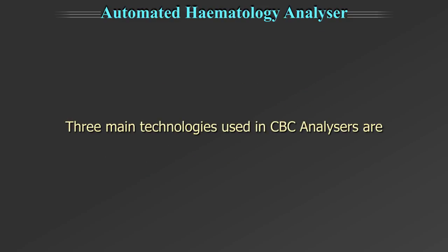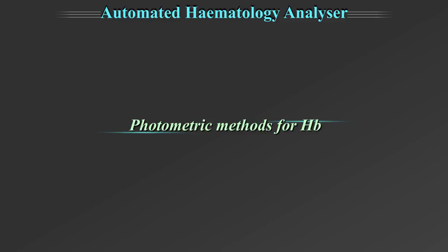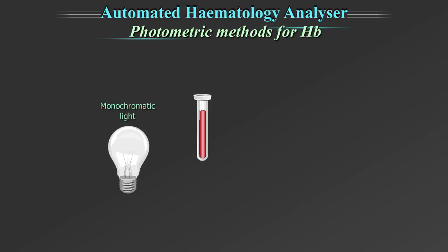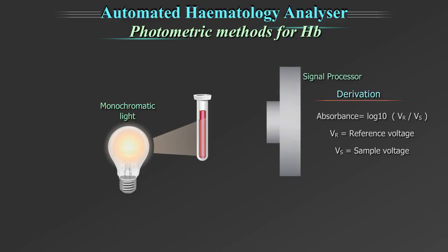The three main technologies used in hematology analyzers are: first, the photometric method for hemoglobin estimation. RBCs are lysed and the hemoglobin released is converted to a colored measurable compound. A monochromatic light from a light source is then passed through the solution.